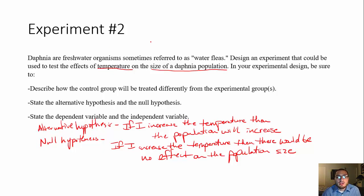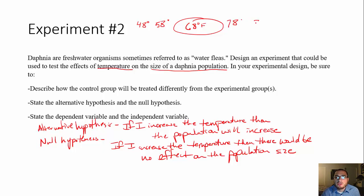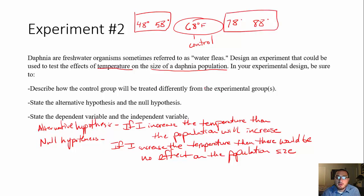How am I going to set up my experiment? Say 68 degrees is the normal pond temperature these freshwater organisms live in, so 68 degrees is my control. I'm going to set up different groups of temperatures — 48, 58, 68, 78, and 88 degrees. Those other temperatures are my experimental groups. How is your control treated differently from the experimental? Your control will not have a change in temperature — just regular pond water left at its normal temperature. In the experimental group, I'm going to change the temperature. That is the one variable I am changing.